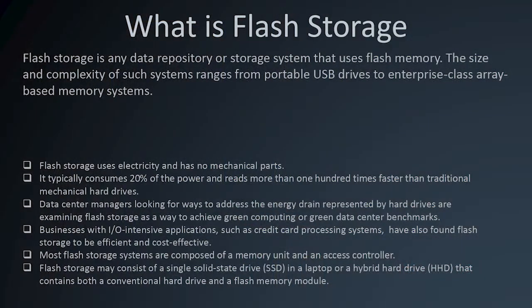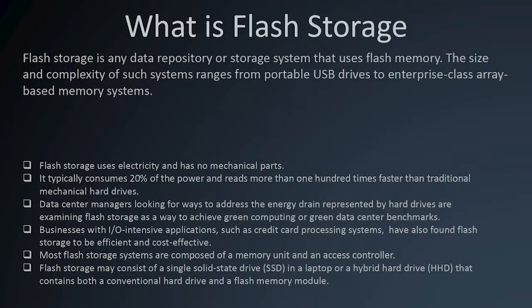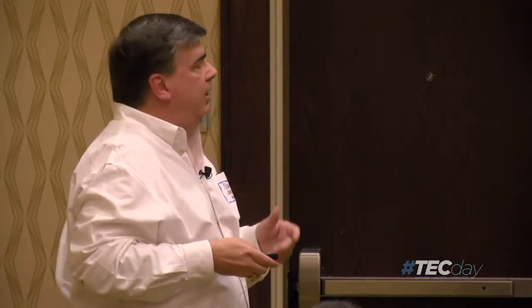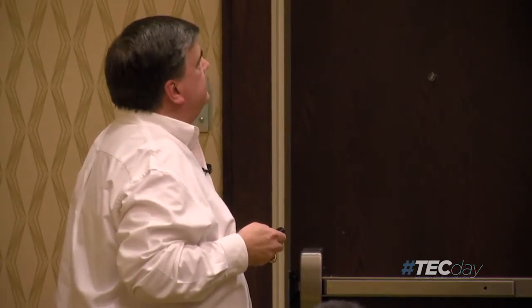Flash uses electricity and has no mechanical parts, so it doesn't have the rotational delay or seek time delay of a regular hard drive. It uses much less power because it doesn't have that mass that has to be driven at a consistent RPM all the time. It's digital, so it's much faster. In some data centers there literally isn't enough power to add anything else — if you're facing a performance problem, you'd typically put in a bigger array with more spindles, but if your data center has no power to spare, that's not an option. Flash uses generally less power and solves that problem.